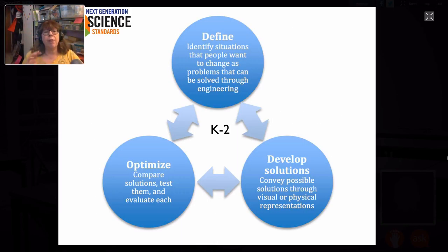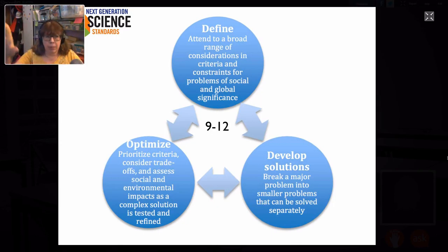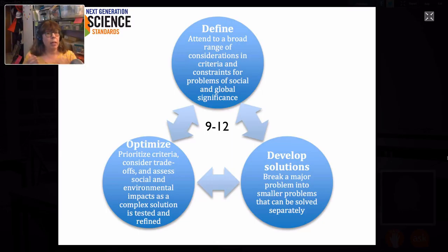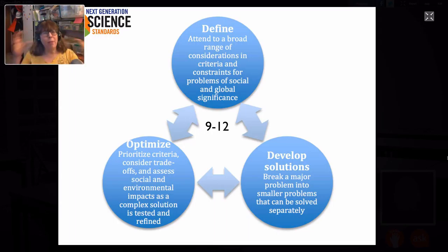The Next Generation Science Standards make a commitment to integrate engineering design into the structure of science education by raising engineering design to the same level as scientific inquiry. We're doing well with scientific inquiry in schools. The NGSS goes through grade-level bands - K-2, then 3-5, 6-8, and 9-12 - defining what engineering design looks like at every level with examples. These standards are being adopted by states throughout the United States. They're not Common Core, which covers only math and English language arts, leaving concerns that science and engineering get left behind because everyone focuses on tested subjects.